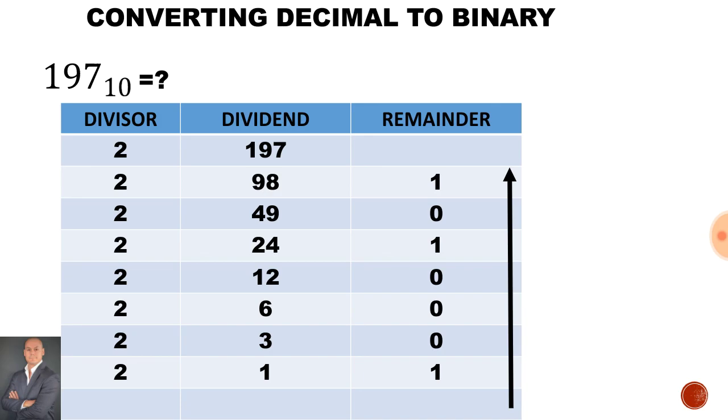Now on the last row we'll notice that 2 cannot go into 1. It is not possible. Therefore it will be 0 remainder 1. Now when we read our answer we read from the bottom going up. So the answer will be 11000101. When we write our answer we use a small 2 to represent that this is a binary number.